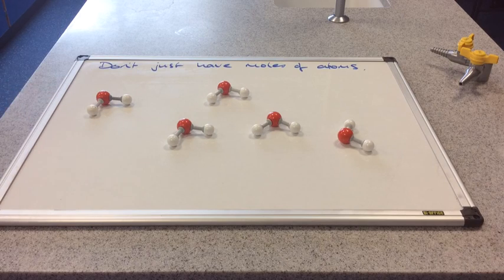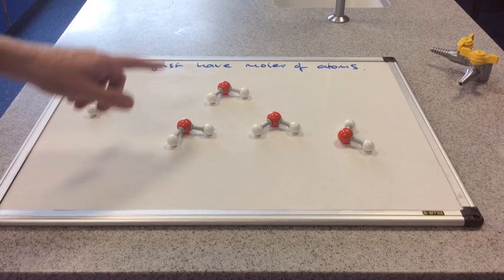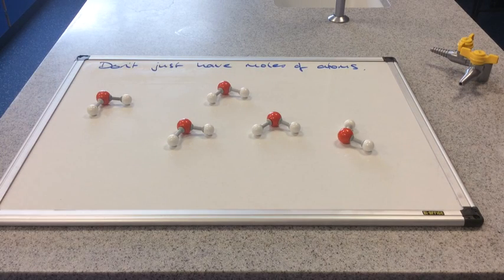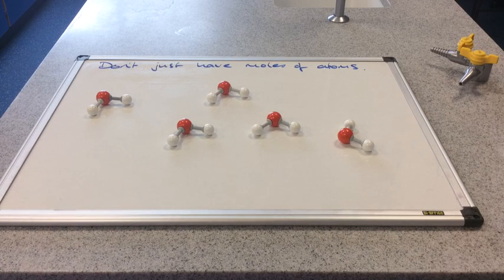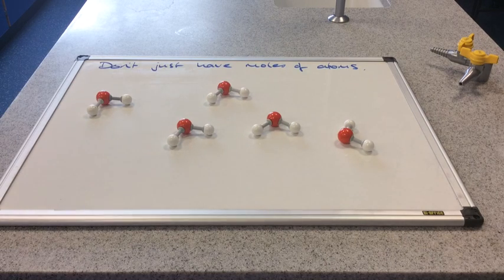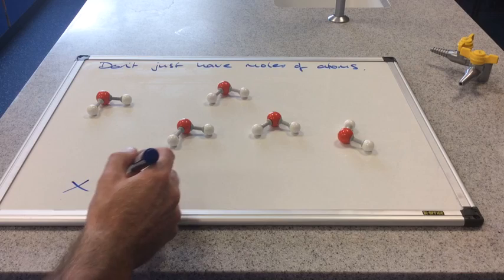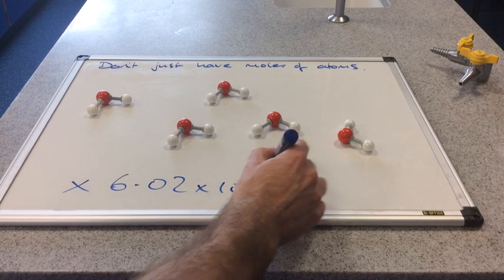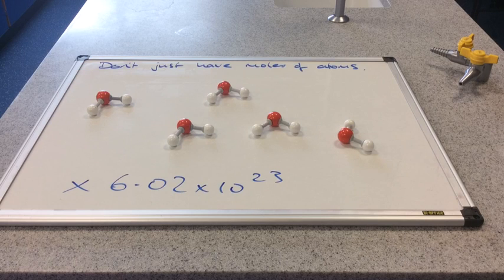So basically, we've got one, two, three, four, five water molecules on the board now. If we wanted a mole of water molecules, we would need Avogadro's number of water molecules. In other words, the same number of atoms as in 12 grams of carbon-12. So we'd need Avogadro's number of these molecules to have a mole of water molecules.